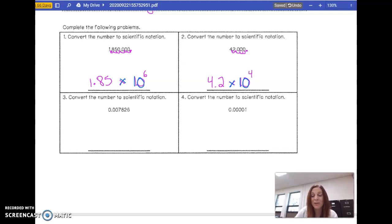Now, 42,000, that's a big number, a large number greater than 1. So it's a positive exponent. 1,850,000, large number, positive exponent. Notice, too, if you go from where you want it, to where it is, you're moving to the right, positive direction. Okay?